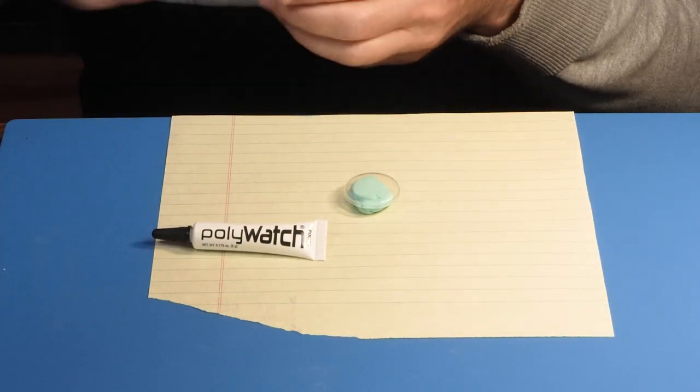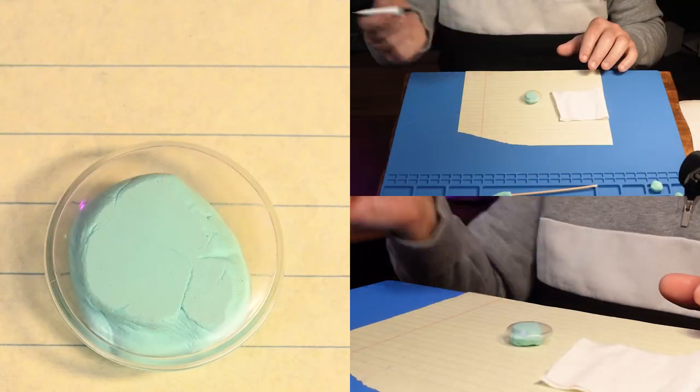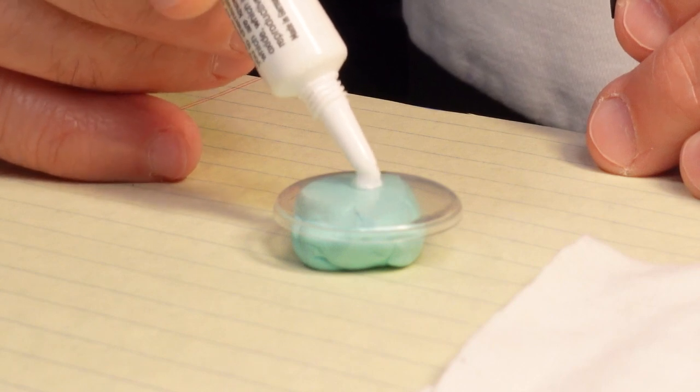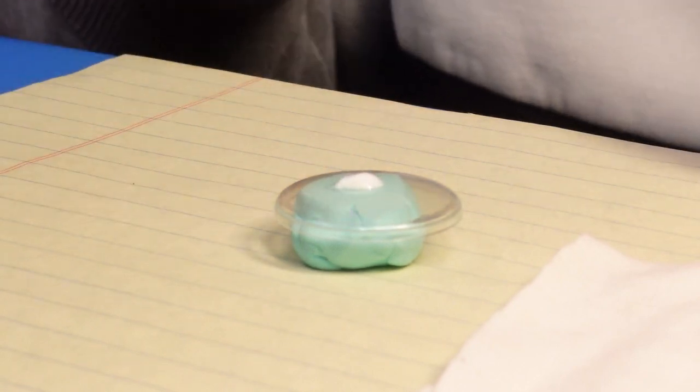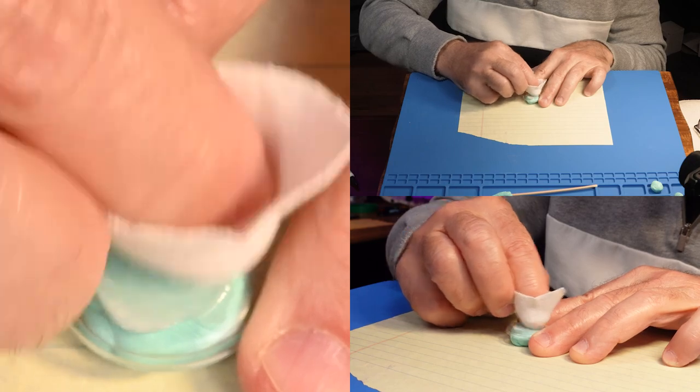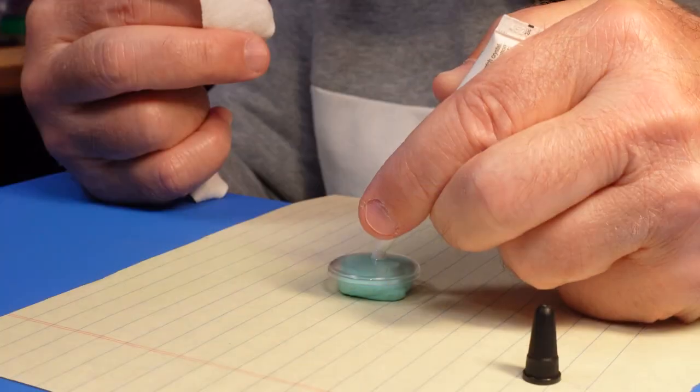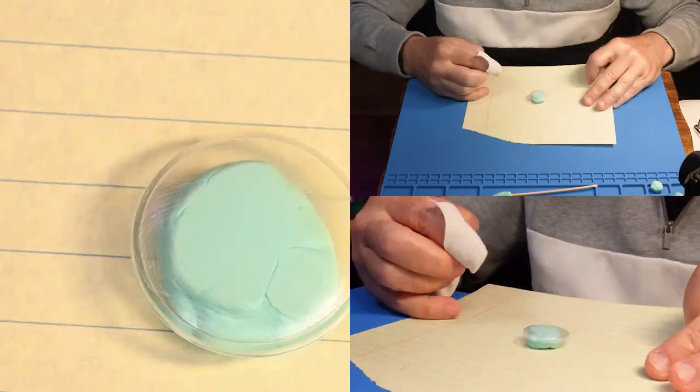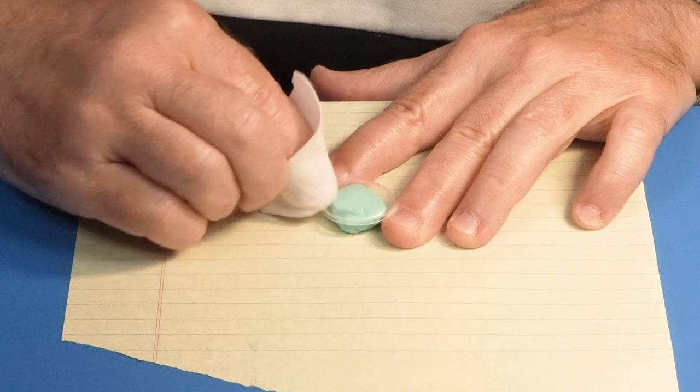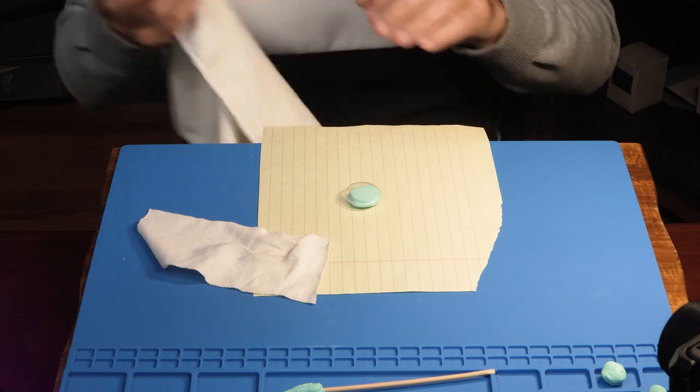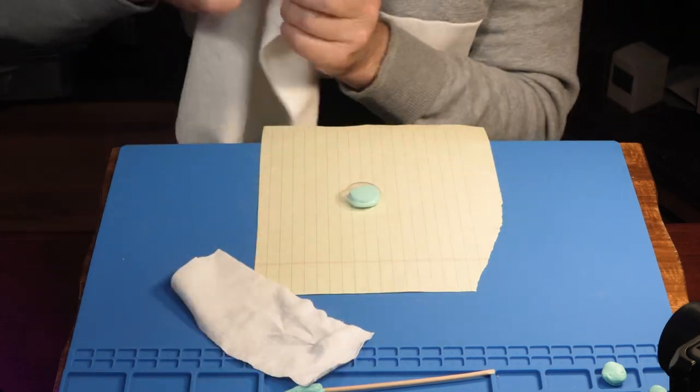Polywatch—just going to use that with a cloth. We're just going to start with a blob right in the center. I think most of that first blob was liquid. A little smear. Changing directions, rolling over the edges. Once the polish starts to haze up, I like to give it a light buffing with a clean microfiber.